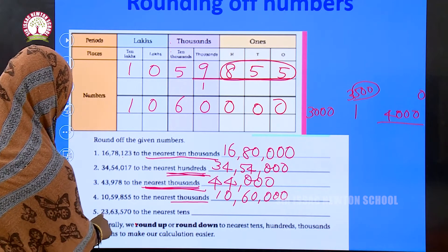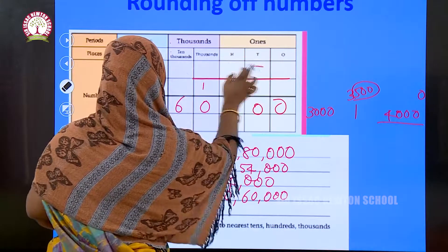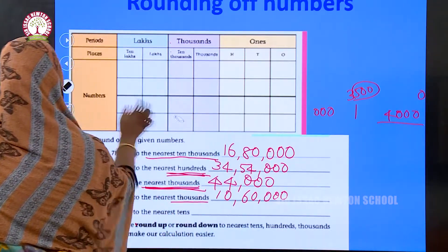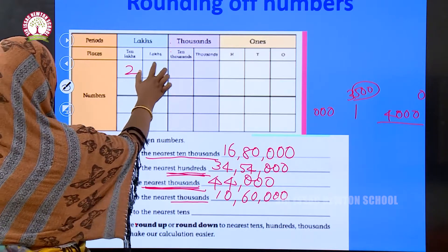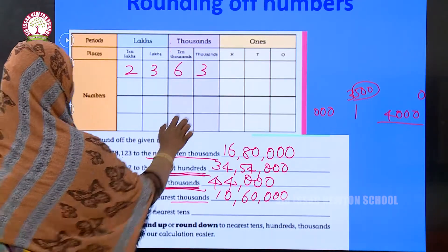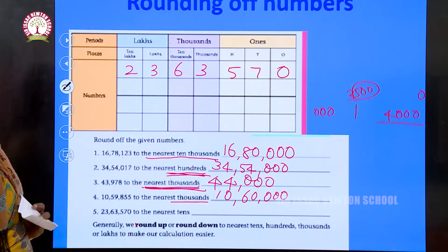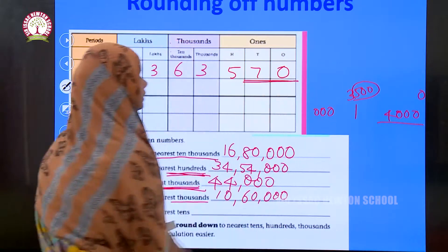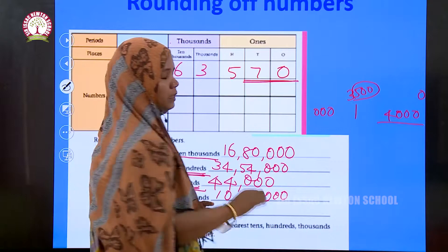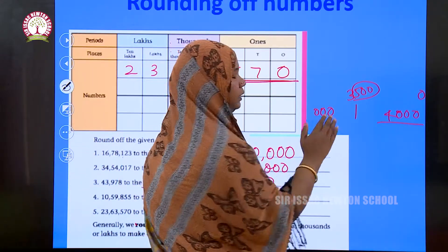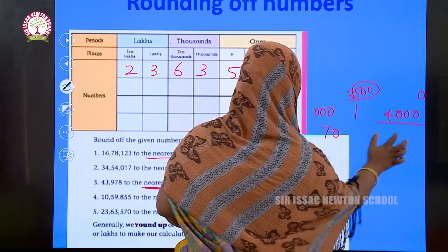Next question: 23 lakhs 63,570 to the nearest tens. For rounding to the nearest ten, we consider only the last two digits, which is 70. The sequence of tens goes 10, 20, 30, 40, 50, and so on. So 70 lies between 70 and 80.